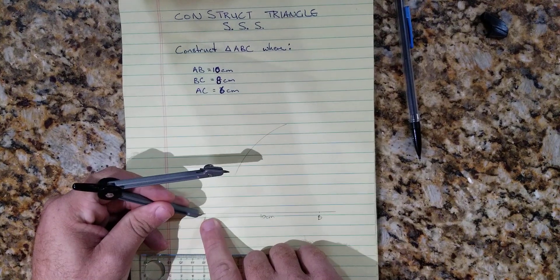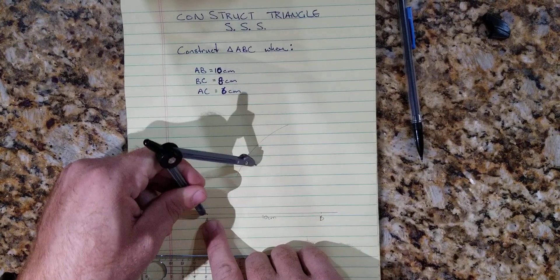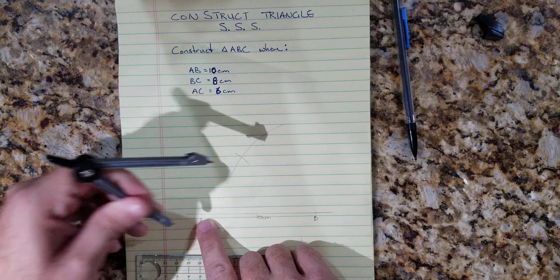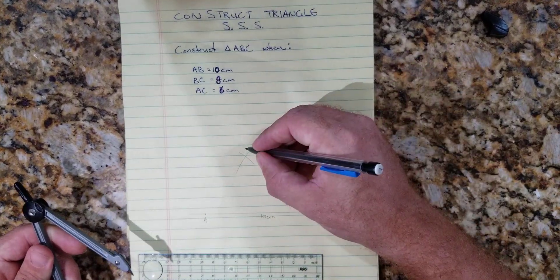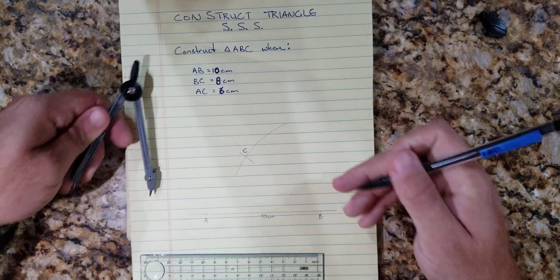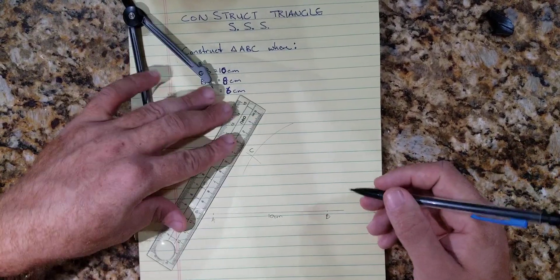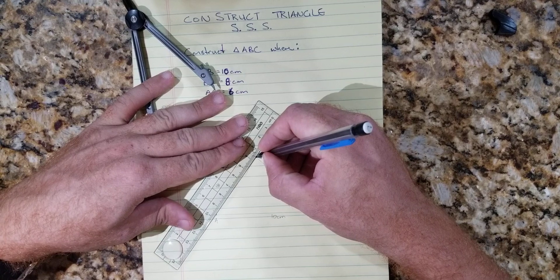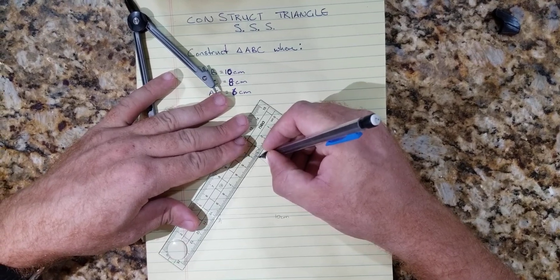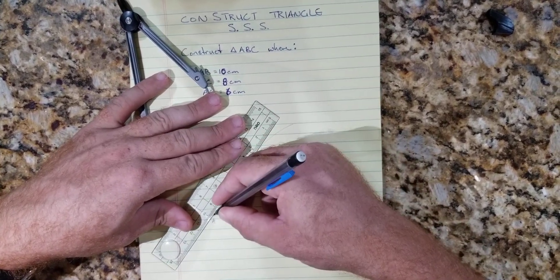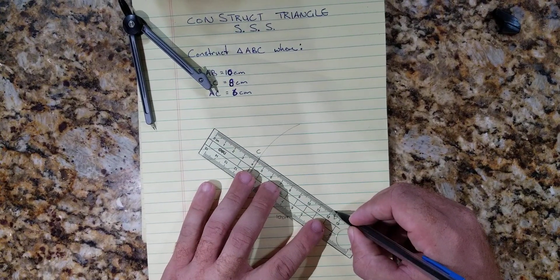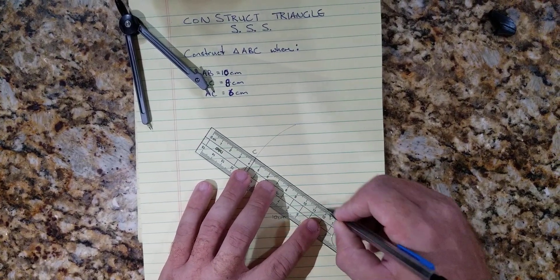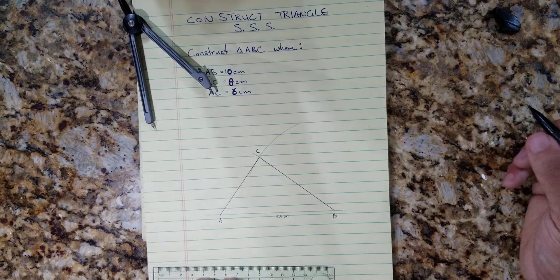And we're going to scribe an arc 6 centimeters. Where the two arcs intersect, that is point C. And then we're going to just connect them, so point C will be connected to point A and point B will be connected to point C. And there we have our triangle.